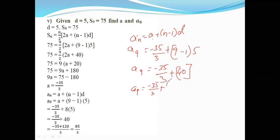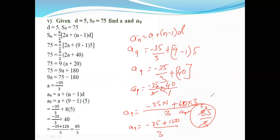Minus 35 by 3 plus 40 divided by 1. Using cross-multiplication, we get (-35 + 120) divided by 3, which equals 85 divided by 3. So the answer is a₉ is equal to 85 divided by 3.